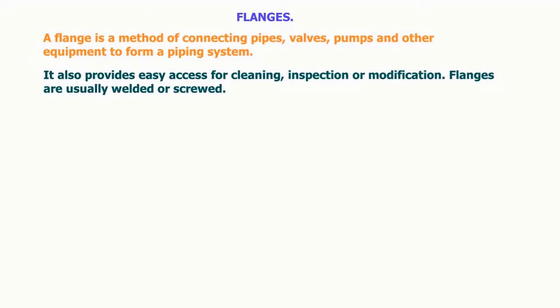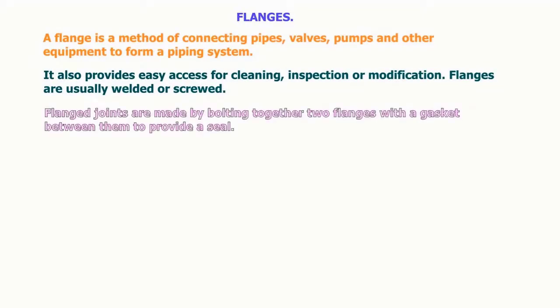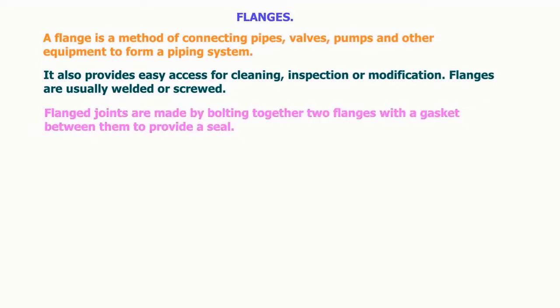Flanges are usually welded or screwed. Flange joints are made by bolting together two flanges with a gasket between them to provide a seal. The most used flange types in petro and chemical industry are in the following list.